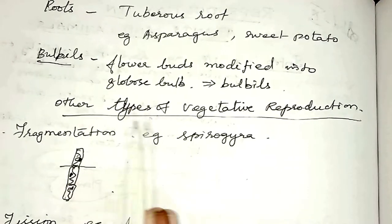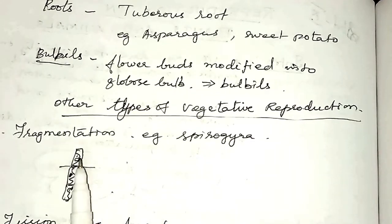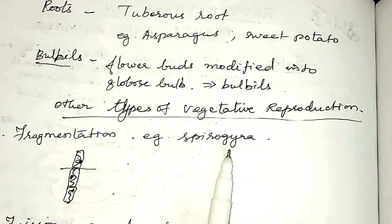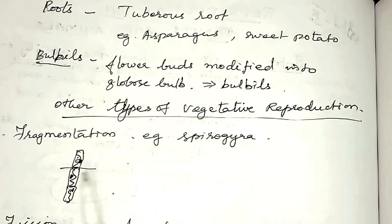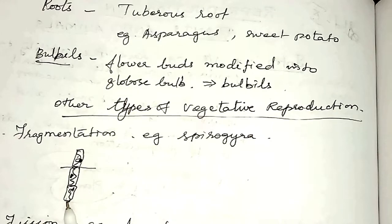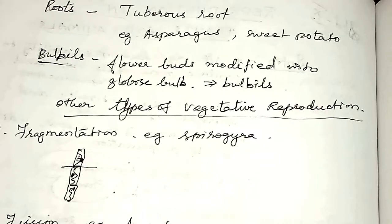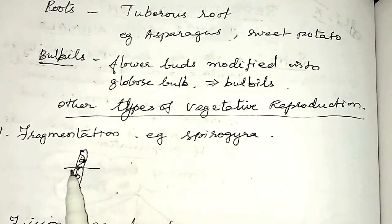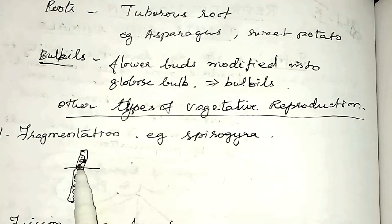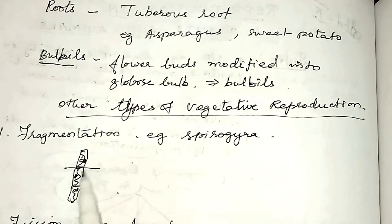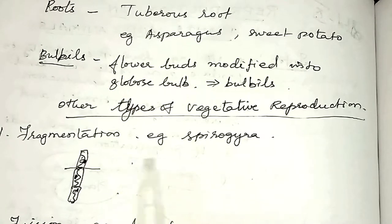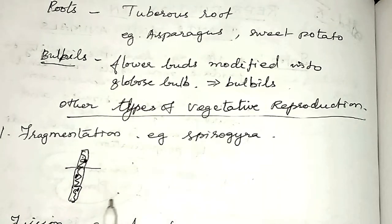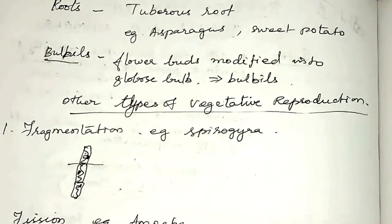Next, we shall see other types of vegetative reproduction. The first one is fragmentation. Example: spirogyra. Spirogyra is a filamentous algae where cells are arranged in a linear manner, one above the other. When the algae mature, there will be a break in the filaments and they leave off small pieces. These pieces develop into new individual plants. This is fragmentation in spirogyra.